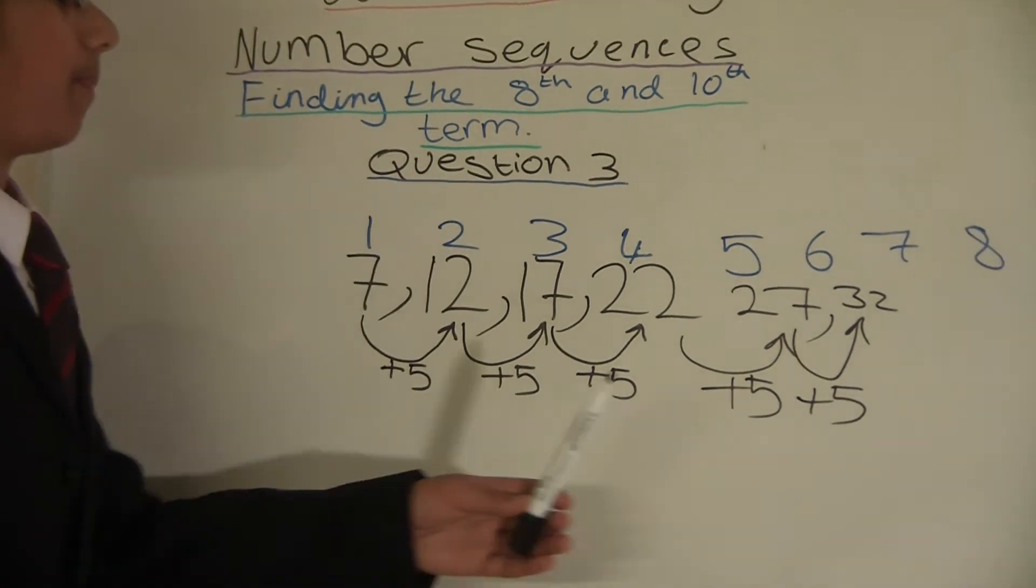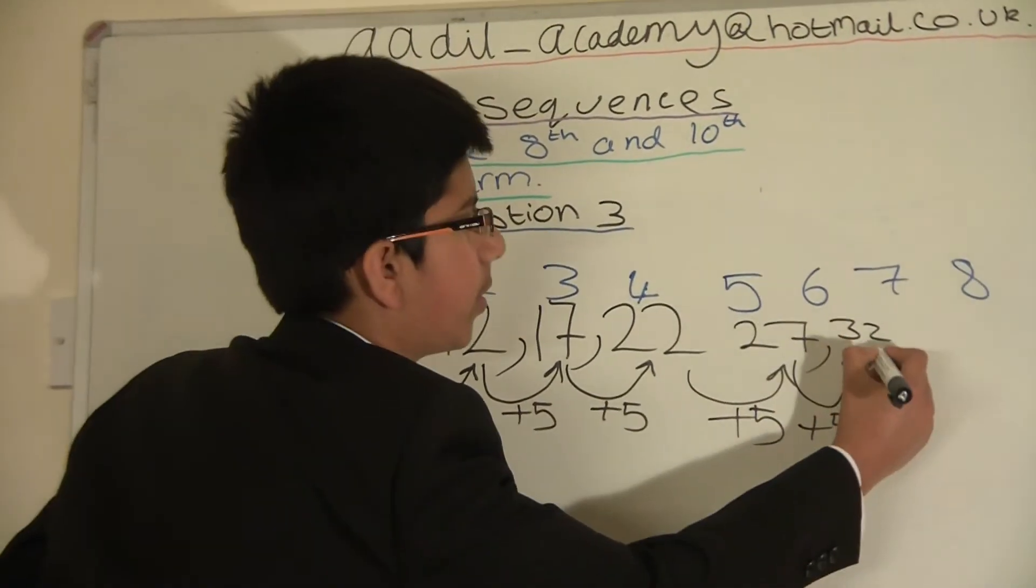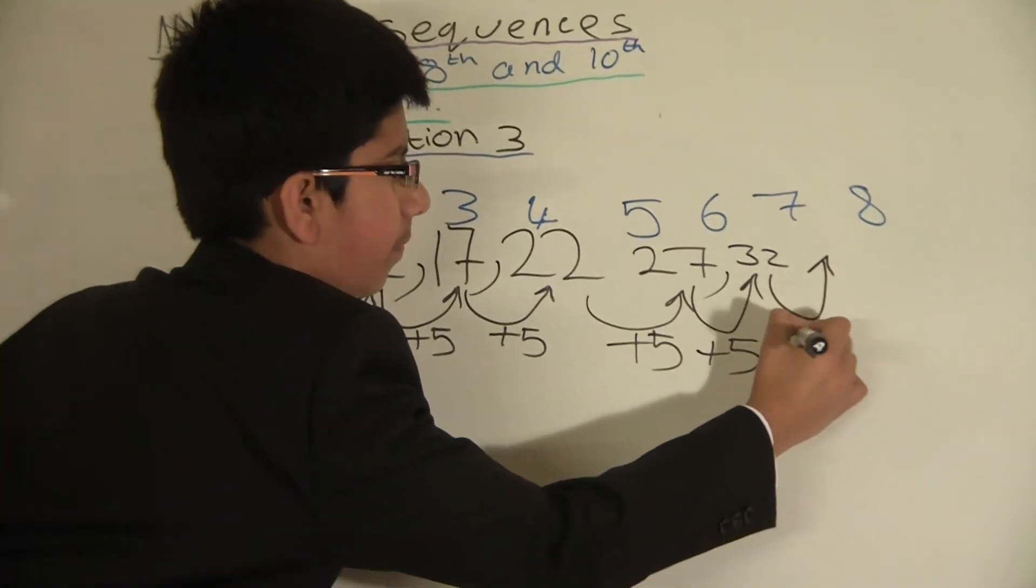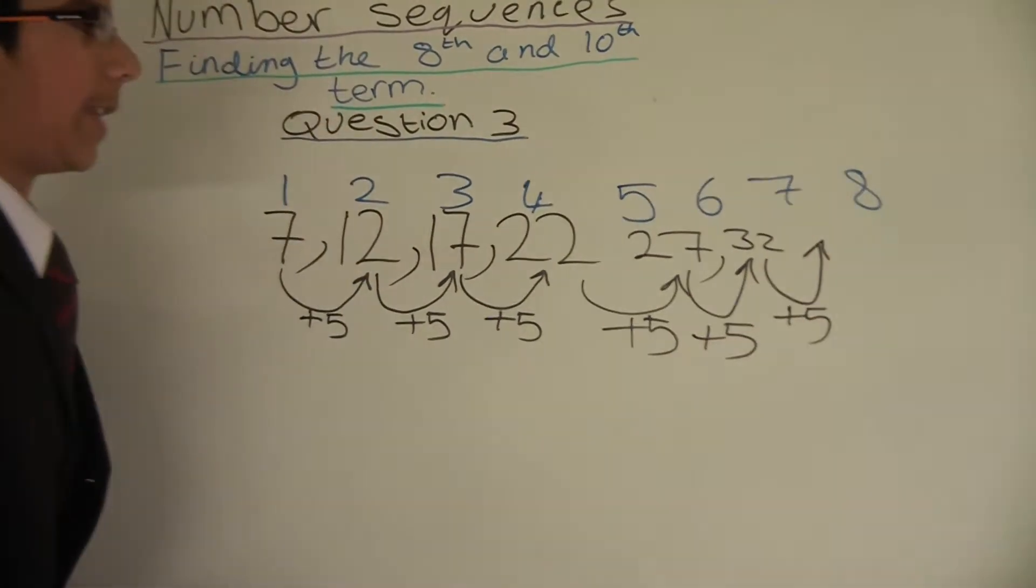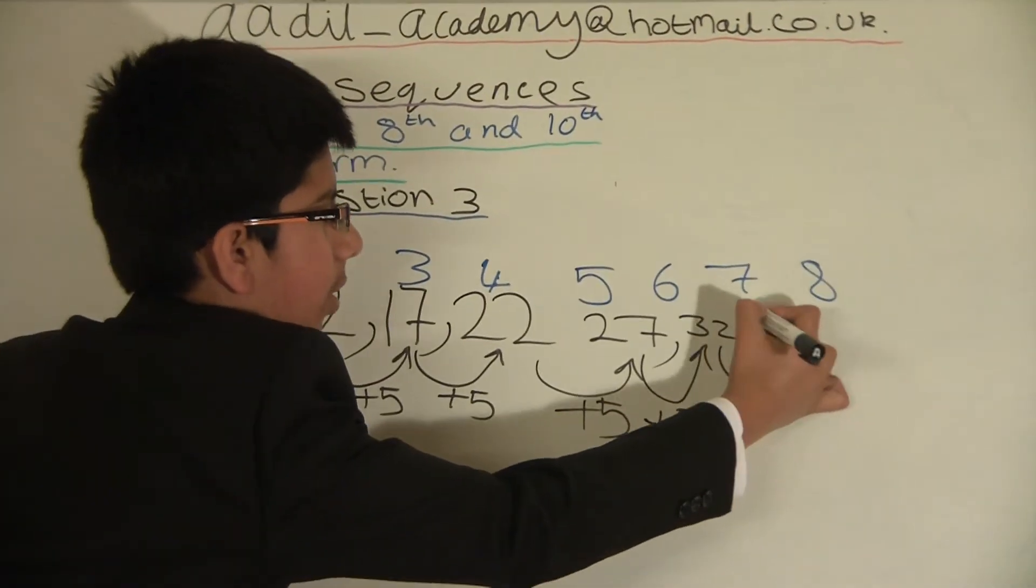Now we will add 5 to 32 to get the 7th position. We get 37. 32 plus 5 equals 37. So that is our 7th position.